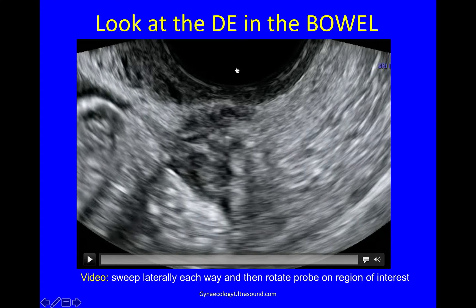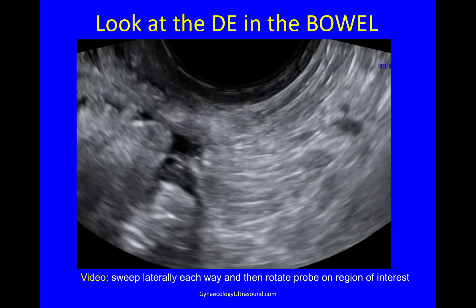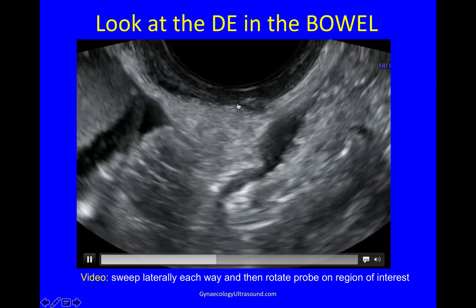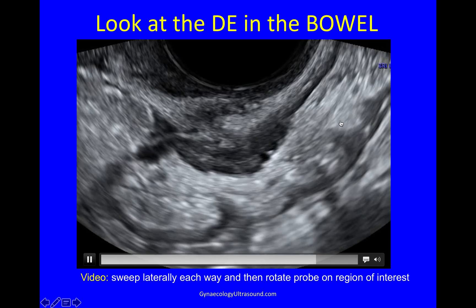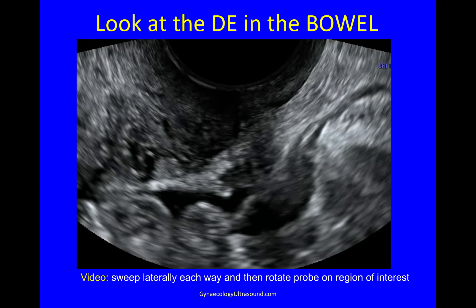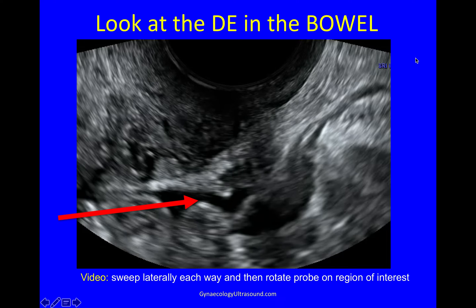Next, we're going to look at the relationship between the deep endo in the ligaments and the bowel. Staying in the posterior fornix, I'm going to sweep both ways in the longitudinal plane, and then when I find the bowel, rotate on it and see what I can see. You can still see the ligament, you can see the ovarian endometrioma, and here comes the bowel. At the end of that clip, you can actually see that was the bottom of the pouch of Douglas, so I'm expecting the pouch of Douglas to be non-obliterated. But this is a very low ligamentous lesion attached to a bowel nodule and attached to the vagina, but not involving a vaginal nodule.